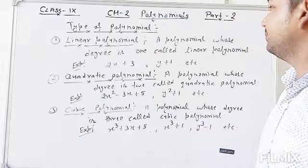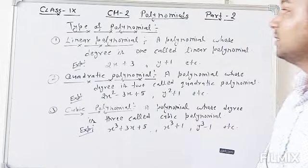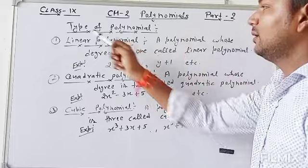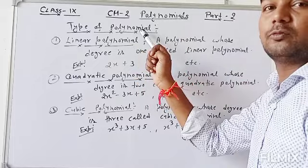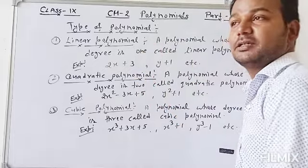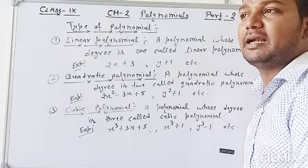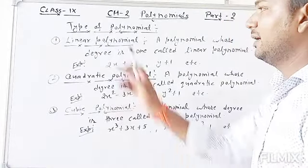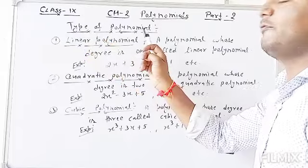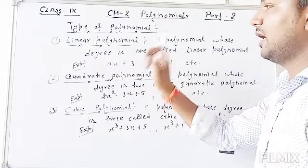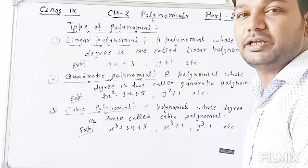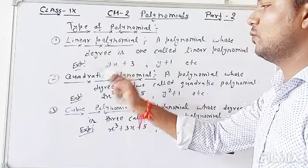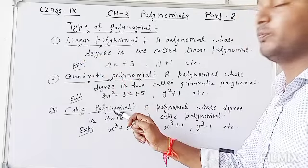Hello everyone, this is Vikas. This is the second part of this chapter on polynomials. In part one, we discussed the definition of this chapter and what is degree — the degree of a polynomial. Here I am going to discuss types of polynomials. Types of polynomials are based on degree: linear polynomial, quadratic polynomial, and cubic polynomial.